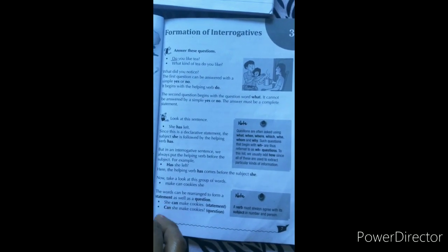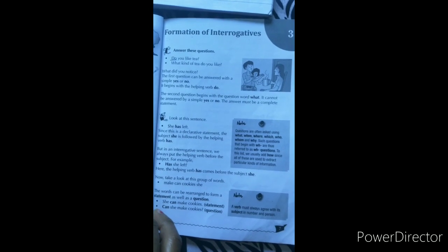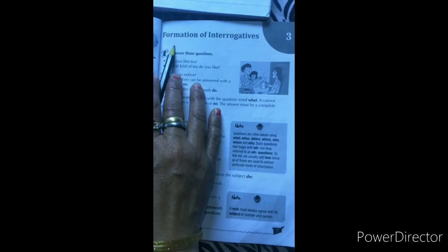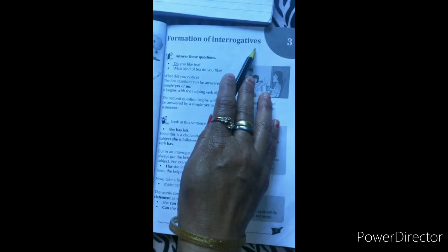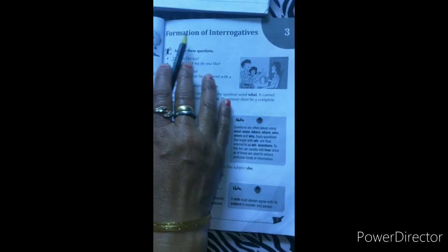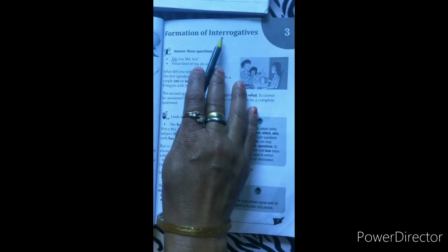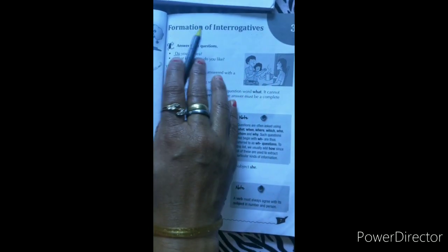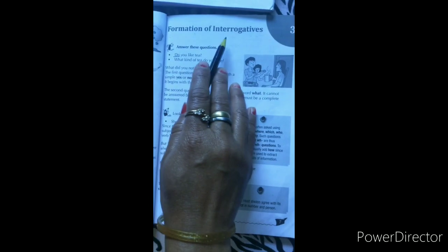Good morning children. Welcome to online class. Myself is Mrs. Aarti Pawar and today we will learn Class 6 English Grammar, 3rd lesson — the name of the chapter is Formation of Interrogatives. Formation means banawat. Interrogatives means prasnovachak jo waakya hoote hai — yaani prasnovachak waakya ki banawat.